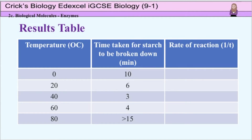Results should be recorded in a table as shown here. The independent variable — what you decided to change, here the temperature — goes in the first column. Note the units go into the column heading, here degrees C. Then what you find out, the dependent variable — here the time taken for the starch to be broken down — goes into the next column. Again, the units, minutes, go in the column heading.